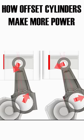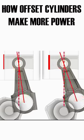This increases friction. The sharper the angle of the rod, the harder the rod pushes the piston into the cylinder wall, and the greater the friction.